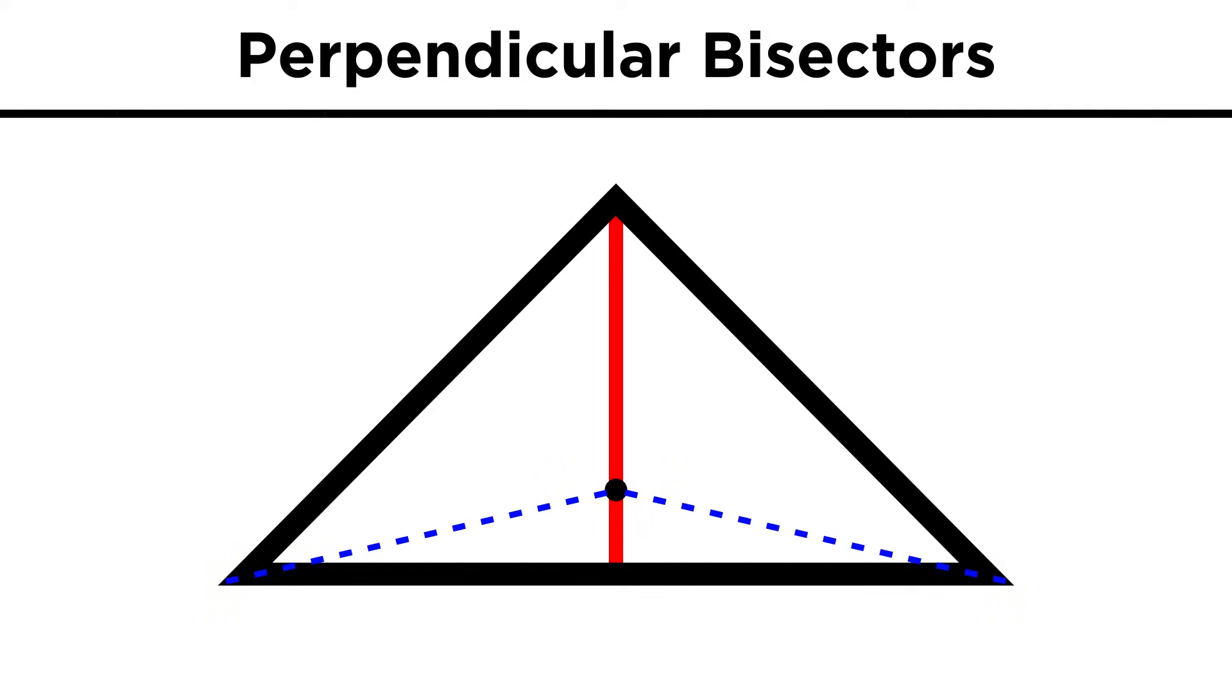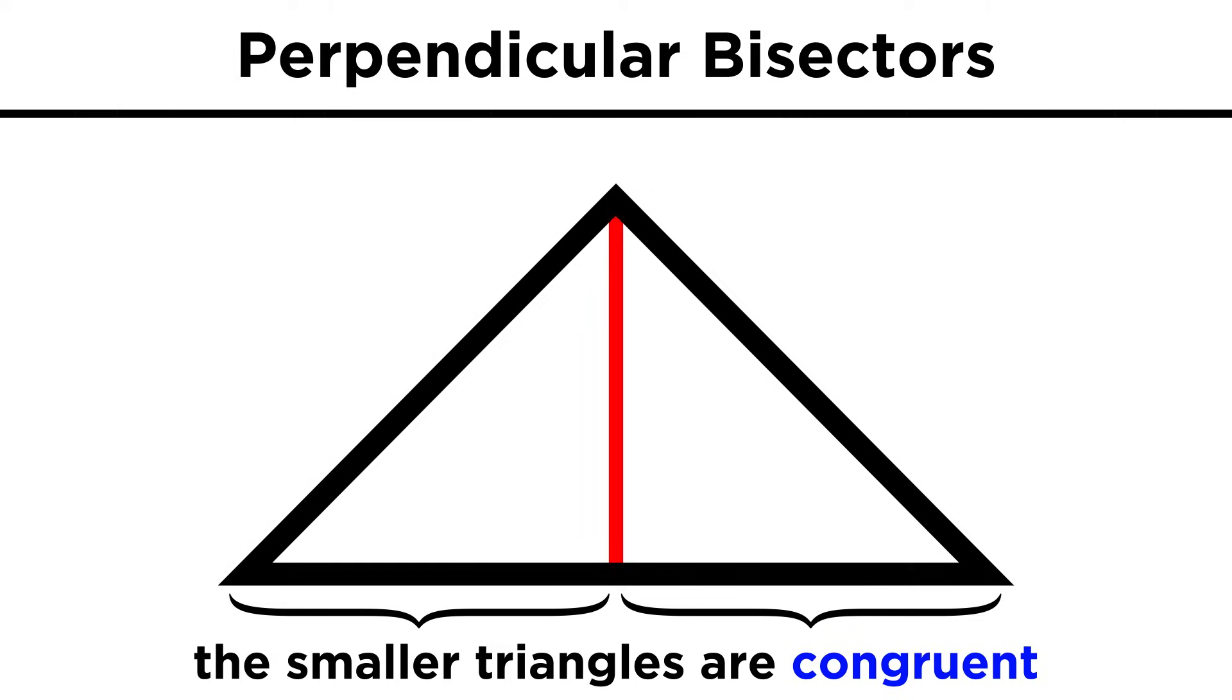So if the bisector also coincides with the other two sides, then these two sides must be equal, and we have a right triangle. This also makes the two smaller triangles congruent.